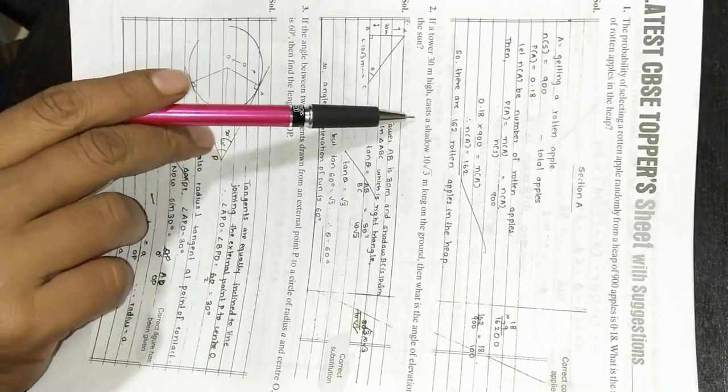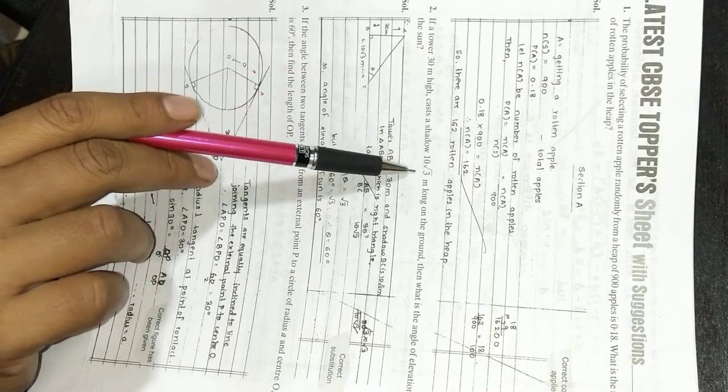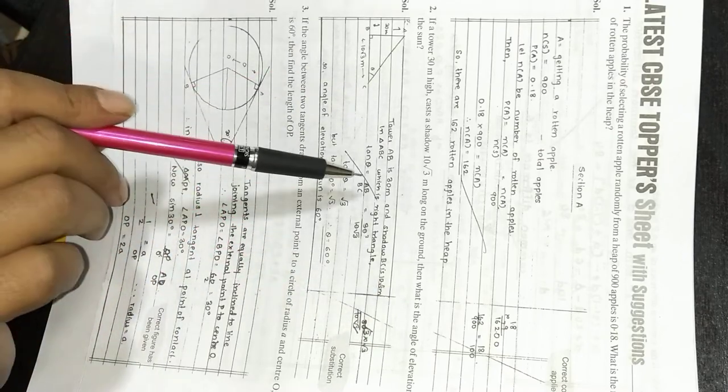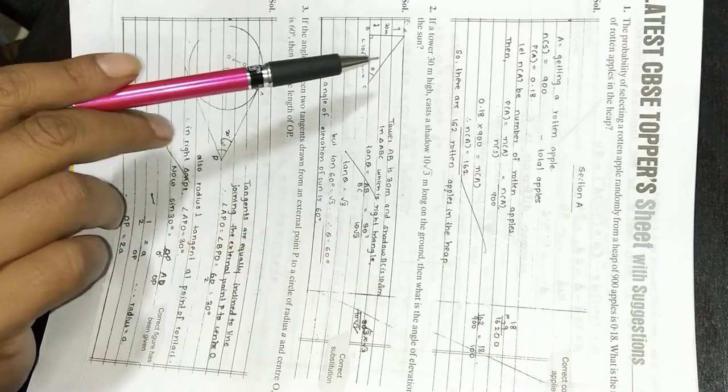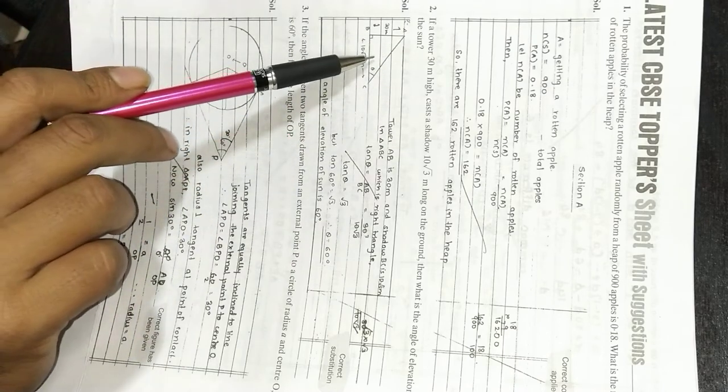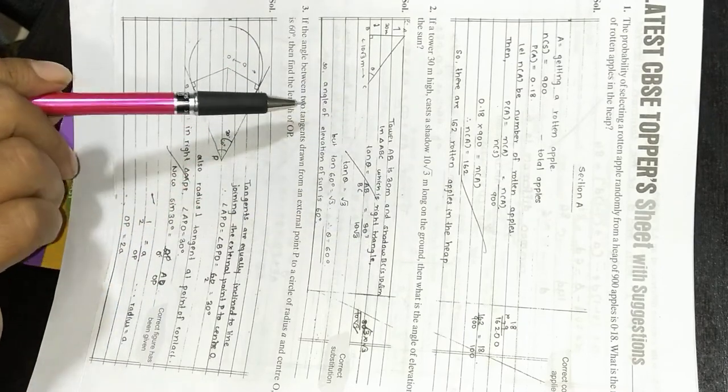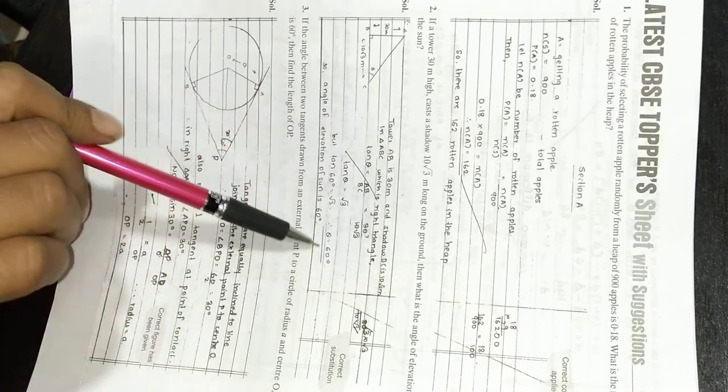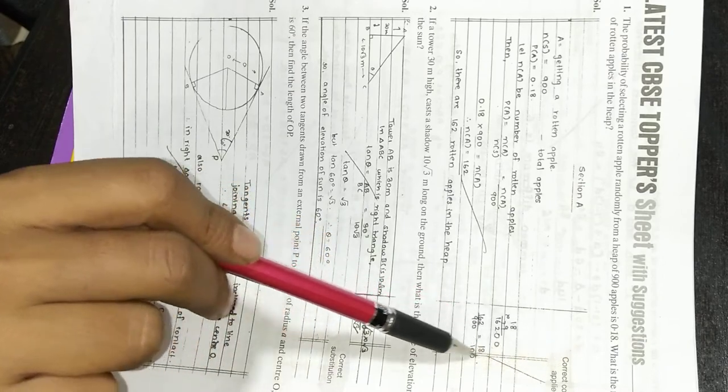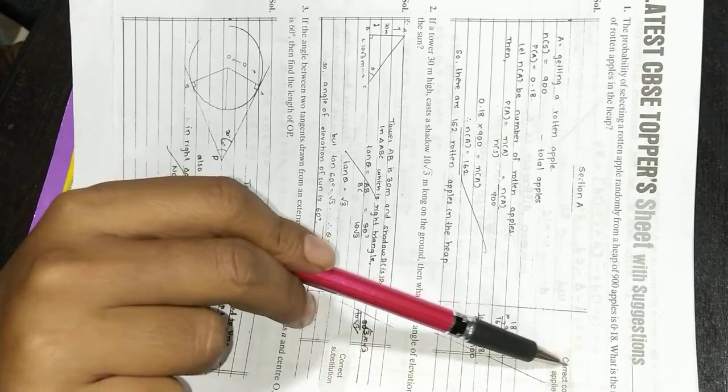Next question you can see is from height and distance: if a tower is 30 meter high casts a shadow of 10 root 3 meter long on the ground, then what is the angle of elevation of the sun? This question is also in RS Aggarwal. This question from height and distance has diagram mentioned. Diagram with statement and trigonometry is also applicable in this. So make it in detail so that you get complete marks. And whatever rough work you have, on the right side of the copy you can make a margin and in that margin do all the rough work.